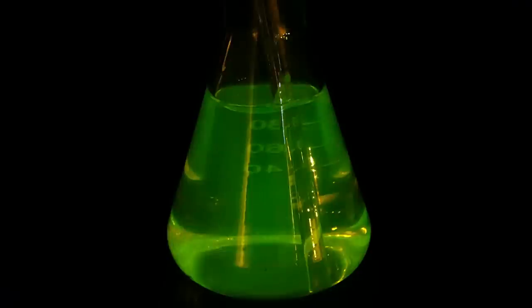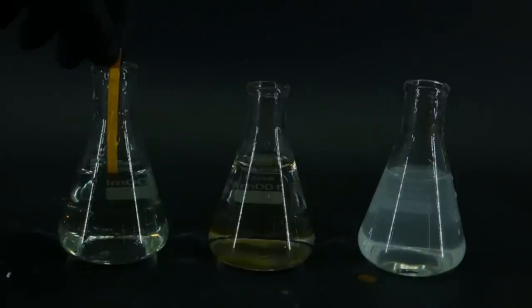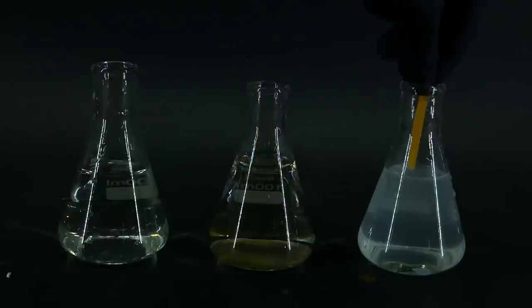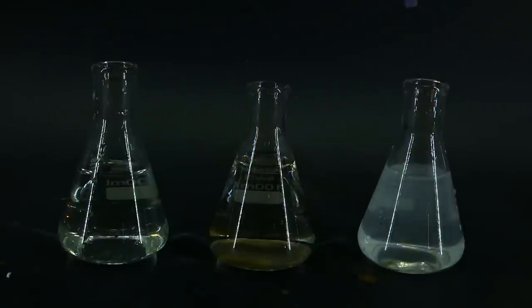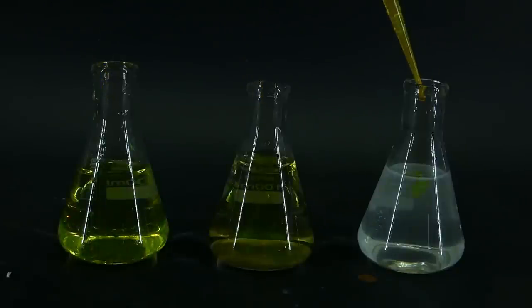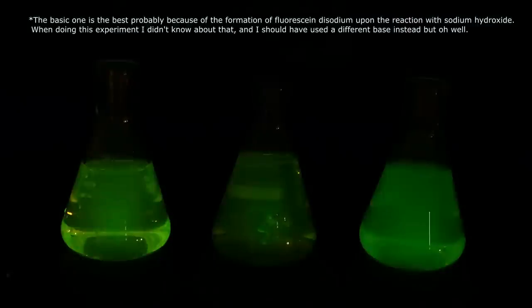The intensity of this color can be modified by changing the pH, and to show it, I got three flasks filled with distilled water, and I made one acidic with some sulfuric acid, one is just at neutral pH, and the last one is basic, because of the addition of some sodium hydroxide. As you can see, the basic one is by far the best one both normally and under UV light.